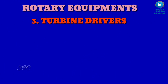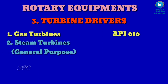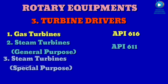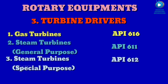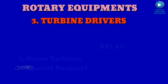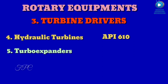Turbine drivers, further classified as: number one, gas turbines, API 616; number two, steam turbines general purpose, API 611; number three, steam turbines special purpose, API 612; number four, hydraulic turbines, API 610; number five, turbo expanders, API 617.